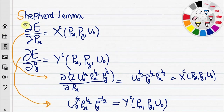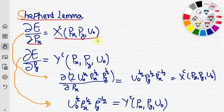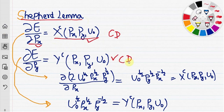Now we go to Shephard's lemma, which is a very important concept. It simply states that the partial derivative of the expenditure function with respect to price gives us the Hicksian or compensated demand function. If we partially differentiate the expenditure function with respect to the price of x, we get the compensated demand for x. If we differentiate with respect to price of y, we get the compensated demand for y.